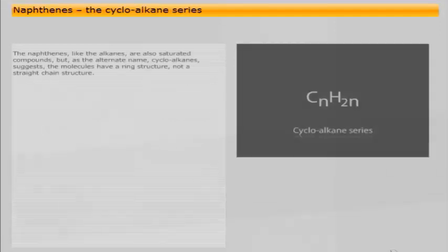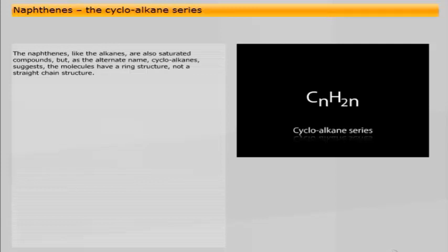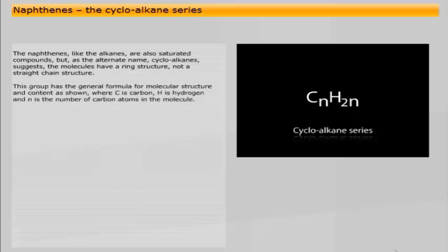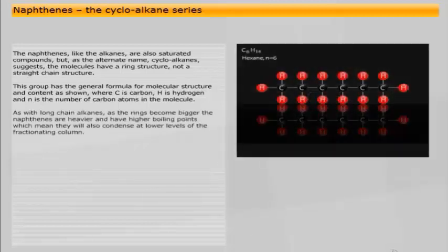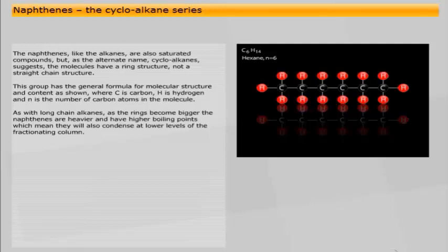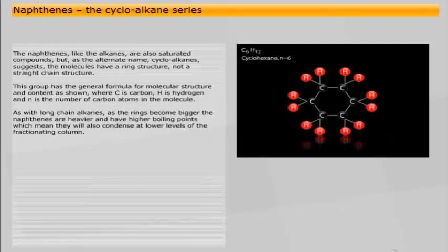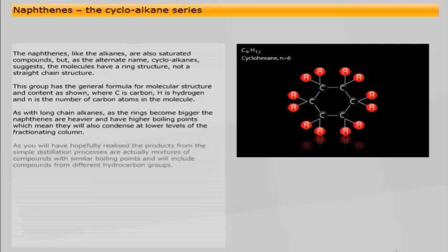The naphthenes, like the alkanes, are also saturated compounds, but, as the alternate name cycloalkane suggests, the molecules have a ring structure, not a straight chain structure. This group has the general formula CnH(2n), where C is carbon, H is hydrogen, and N is the number of carbon atoms in the molecule. As with long chain alkanes, as the rings become bigger, the naphthenes are heavier and have higher boiling points, which means they will also condense at lower levels of the fractionating column. The products from simple distillation processes are actually mixtures of compounds with similar boiling points and will include compounds from different hydrocarbon groups.